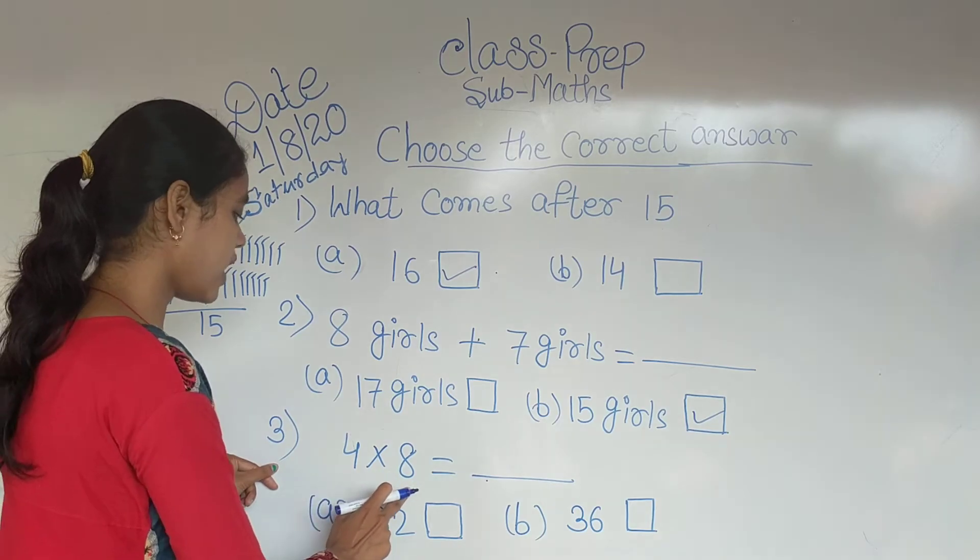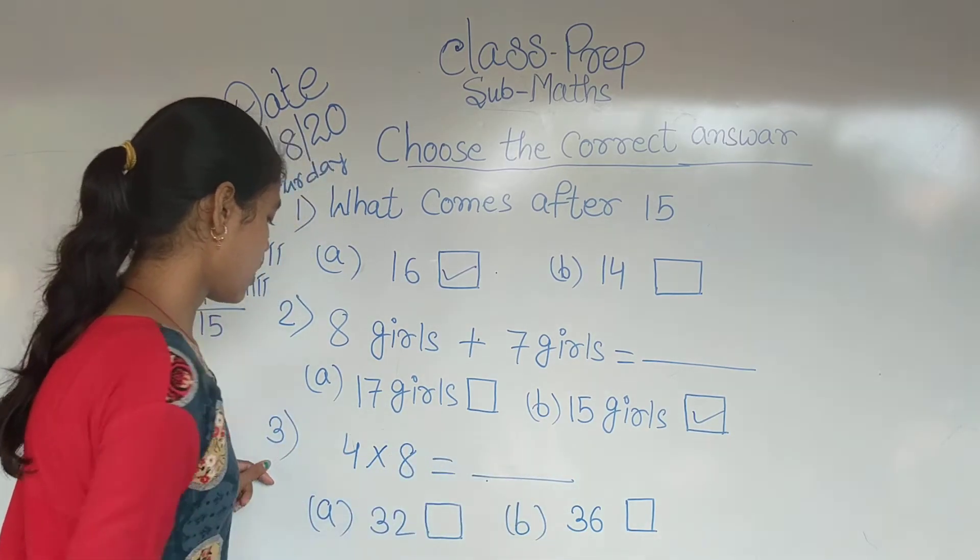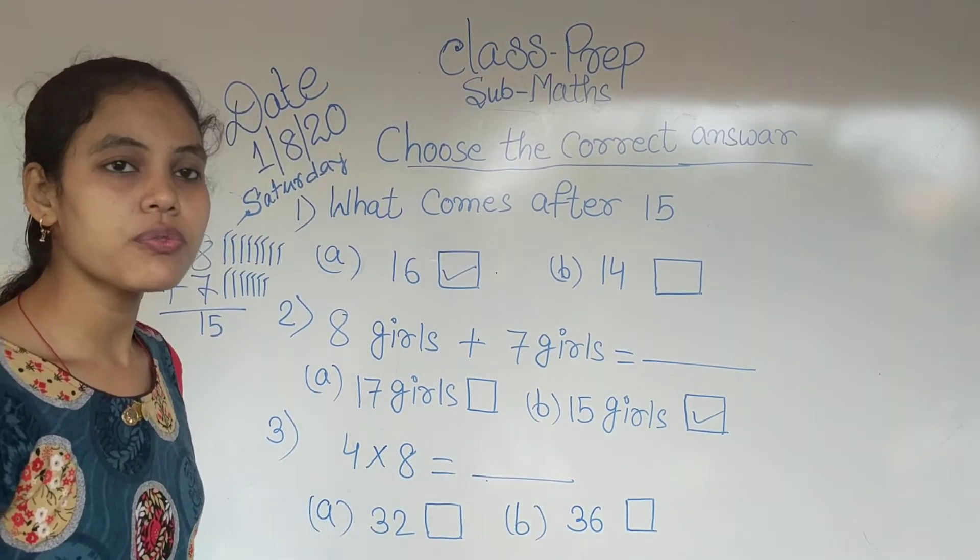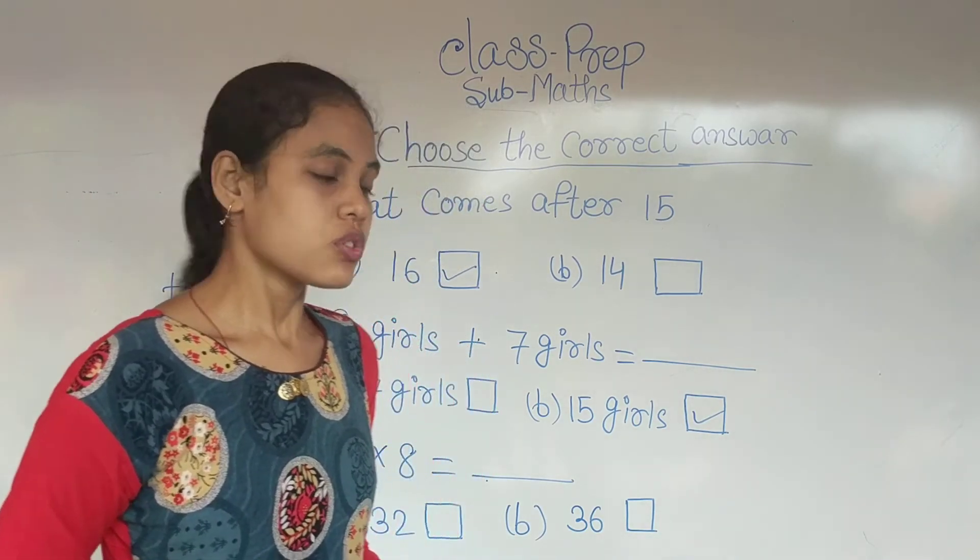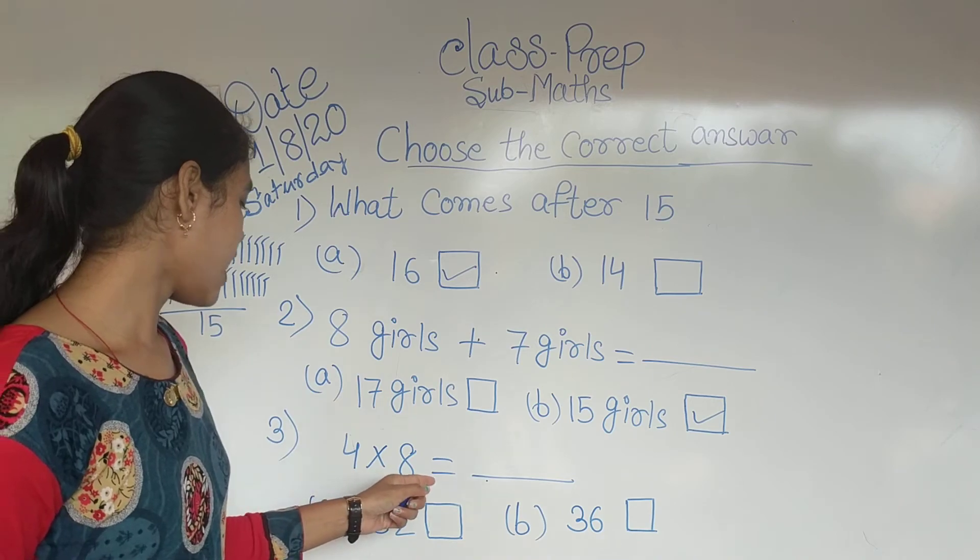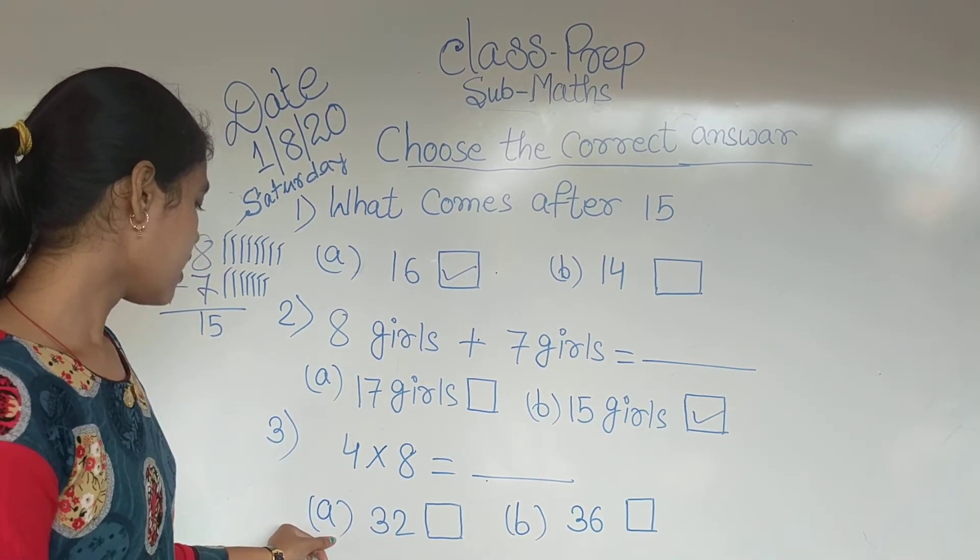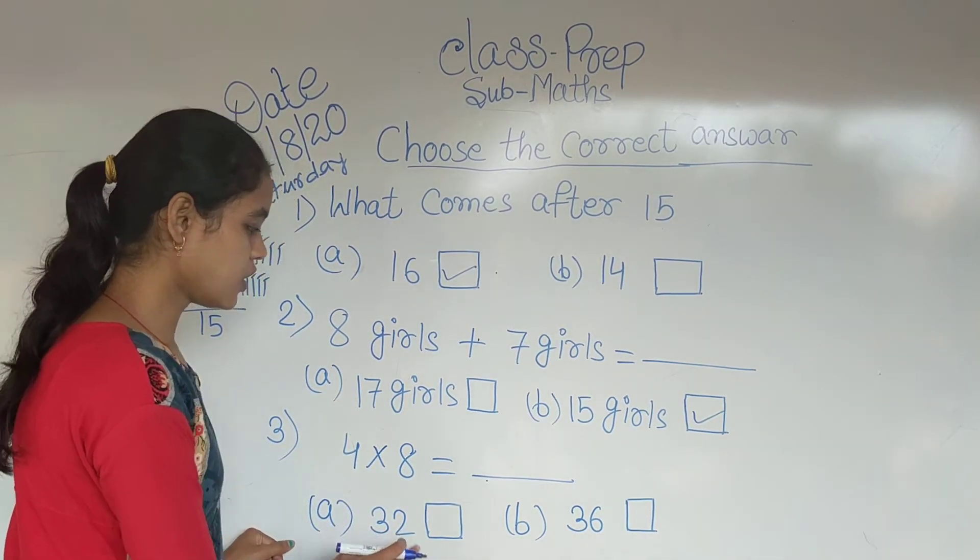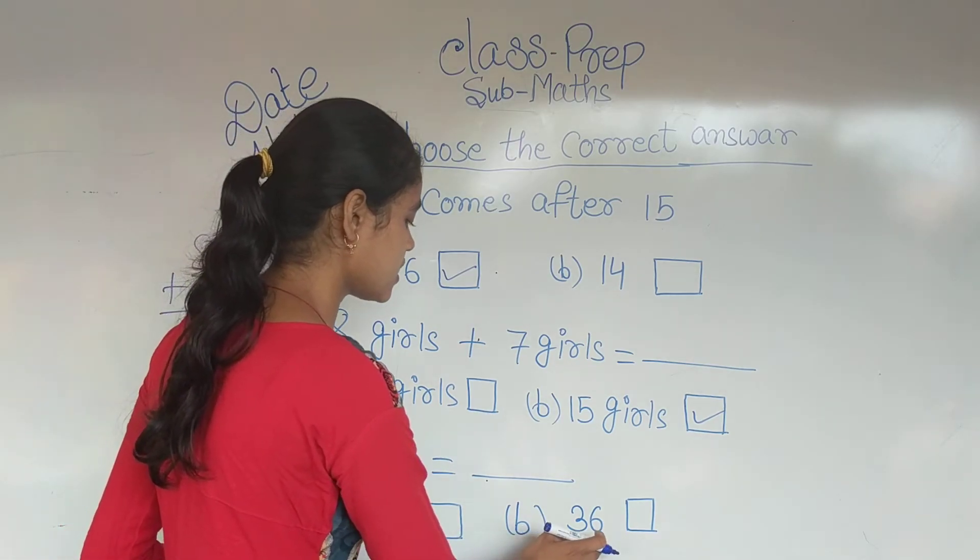Number 3: 4 into 8 equals this. Hum log 4 ka table padhe hain. To 4, 8 za kitna hota hai? 4, 8 za. Option A: 32. Option B: 36.